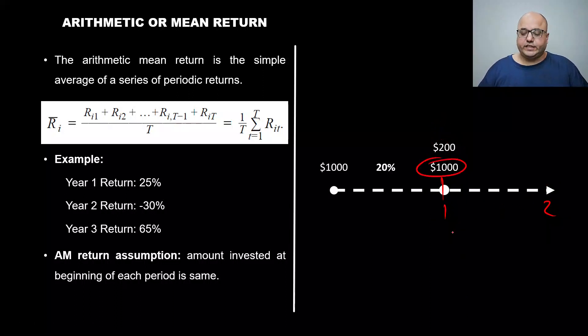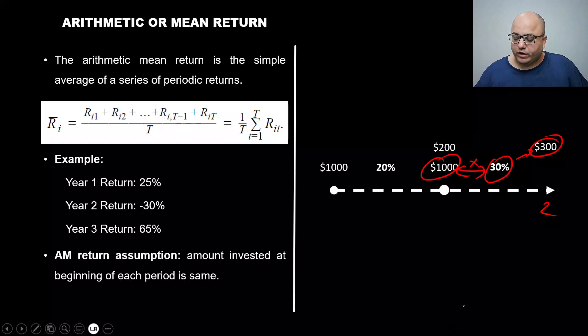But then why are we investing at T equals 1, why are we only investing $1000? That is the basic assumption: the original principal, that same amount is invested every period.